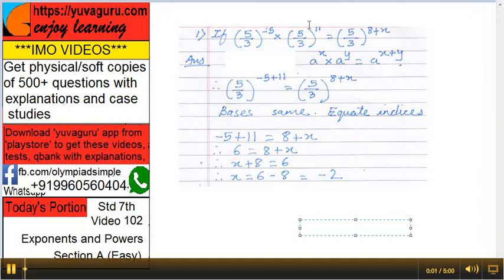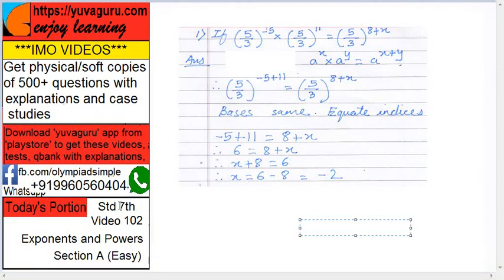Hi friends, welcome to IMO Videos, Standard 7th, Video Number 102: Exponents and Powers, Section A (Easy). Let's start. If 5 upon 3 raised to minus 5 into 5 upon 3 raised to 11 equals 5 upon 3 raised to 8 plus x, then find x.